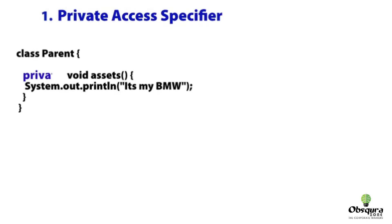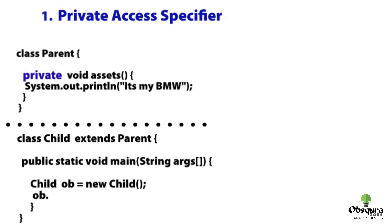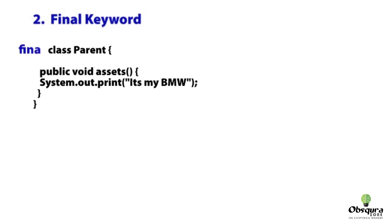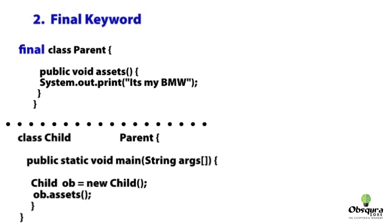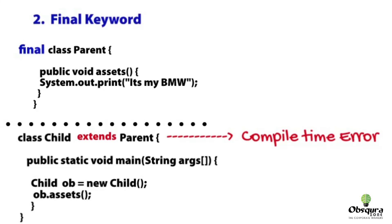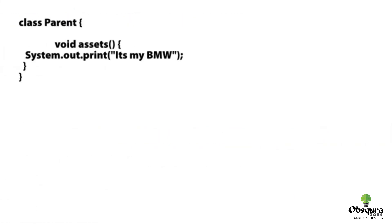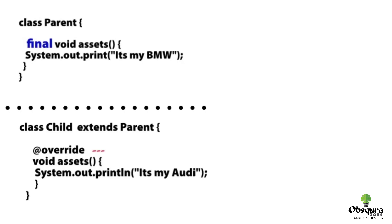First, Private Access Specifier: once we make our parent class instance methods or variable as private, the inherited child class will no longer be able to access such private methods or variables. Second, Final Keyword: the final keyword can be used while declaring a class, method, or even a variable. If a class has been prefixed with the final keyword, then such a class cannot be extended or inherited. When the final keyword is used while declaring a method, that method cannot be overridden in the inherited class.